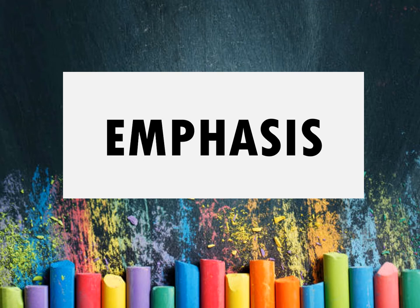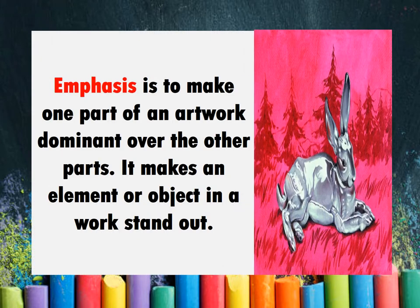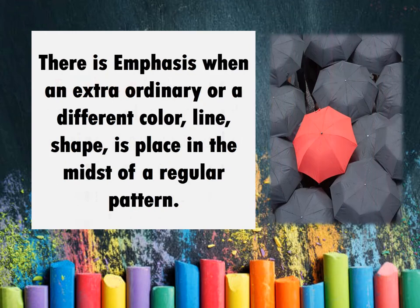Let's proceed to the next principle of art, which is emphasis. Emphasis is to make one part of an artwork dominant over the other parts. It makes an element or object in a work stand out. As you can see on the given picture, the artist gives emphasis on the rabbit which stood out in the painting. There is emphasis when an extraordinary or different color, line, or shape is placed in the midst of a regular pattern. You will be focused more on the red umbrella rather than the black one because the red umbrella gives emphasis in this given artwork.